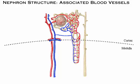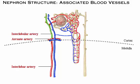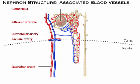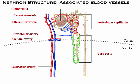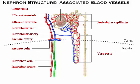From there it enters the interlobar arteries, the arcuate arteries, the small interlobular arteries, and the still smaller afferent arterioles, which empty into a capillary bed called the glomerulus. Leading away from the glomerulus is the efferent arteriole. Notice that the afferent arteriole is larger in diameter than the efferent arteriole. Blood passes from the efferent arteriole into the peritubular capillaries and vasa recta. From there, blood drains into the interlobular vein, flows into the arcuate vein, and enters the interlobar vein, eventually reaching the renal vein.